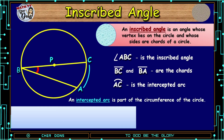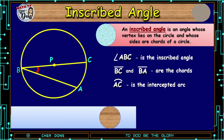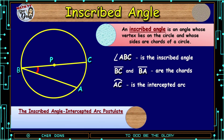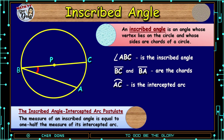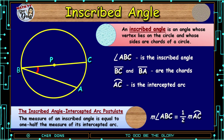An intercepted arc is part of the circumference of the circle. Then we have the Inscribed Angle Intercepted Arc Postulate: the measure of an Inscribed Angle is equal to one-half the measure of its intercepted arc. Let us study the given figure. The measure of Angle ABC is equal to one-half the measure of arc AC. So this is our formula.